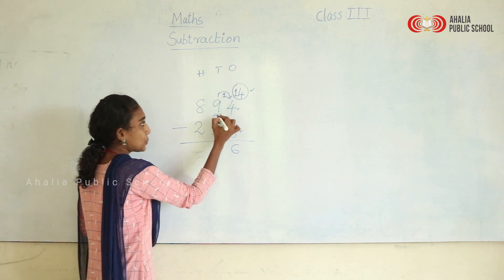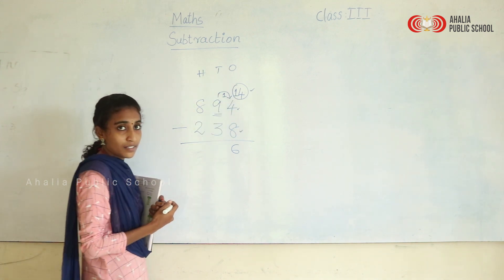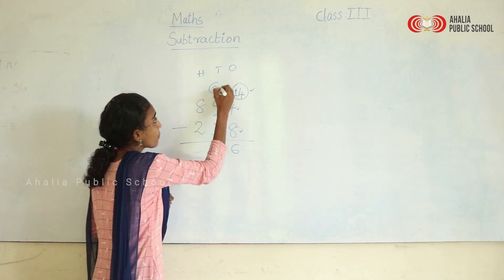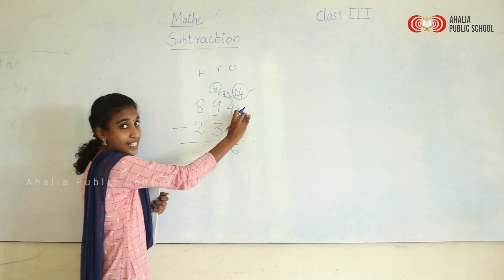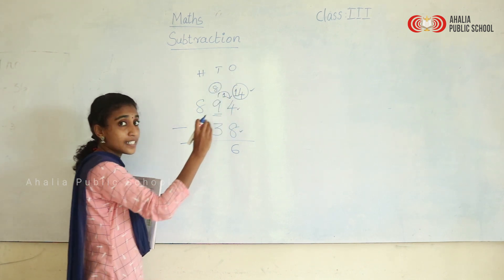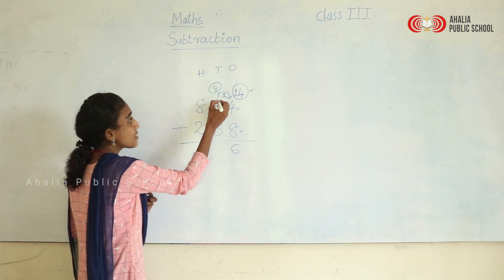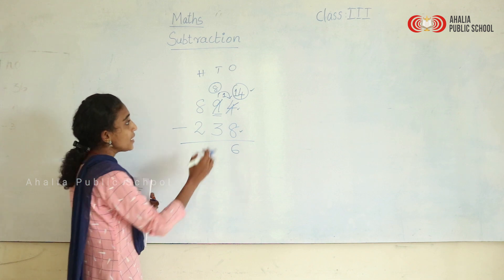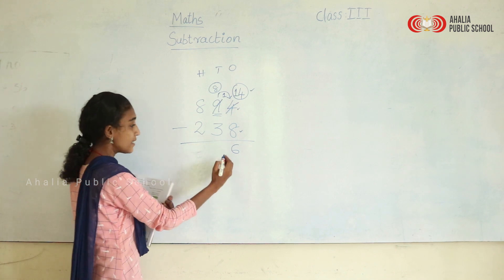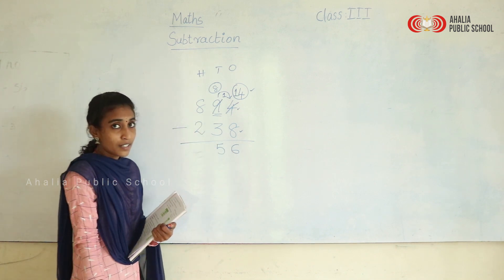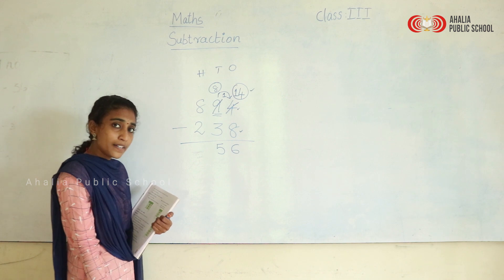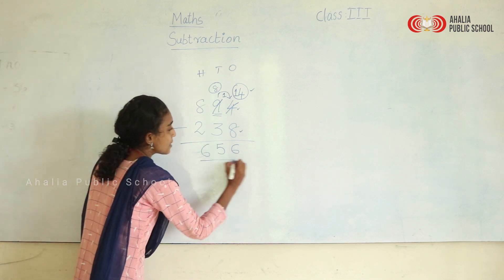Coming back to the tens place — we gave 1 away, so 9 minus 1 gives 8. The remaining is 8. So instead of 9 we now have 8. Then 8 minus 3 is 5. And at the hundreds place, we have done nothing, so as usual 8 minus 2 is 6. The answer is 656.